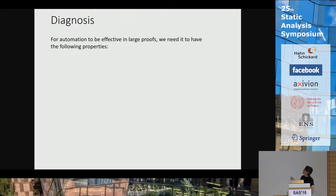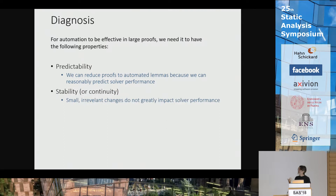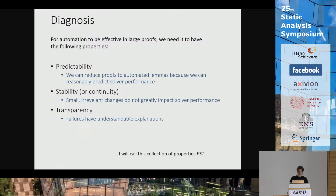My take is that if we want to use automated proof in the context of larger manual proofs, we need it to have certain properties. The first is predictability: we can reduce proofs to automated lemmas because we can reasonably predict how the solver will perform on those lemmas. Moreover, we need stability or continuity — small irrelevant changes in the proof goal shouldn't cause a butterfly effect on solver performance. Third, we need transparency: when things don't work and you don't get a proof of a lemma, you need actionable feedback. I'll refer to these three properties as PST: predictability, stability, and transparency.